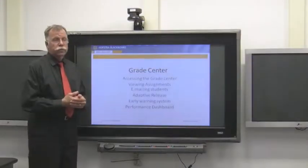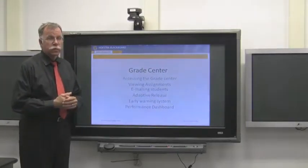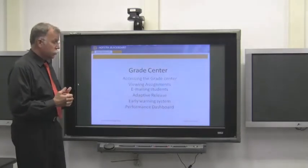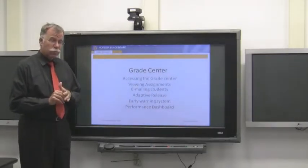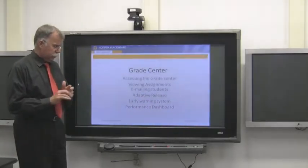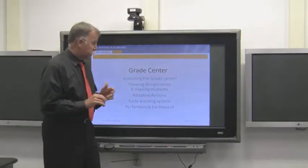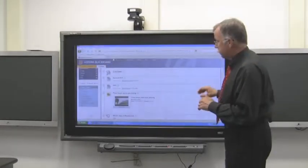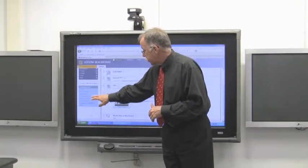Now we're going to work through the Grade Center. And this is another tool with which many of you are already familiar. Again, it's a lot the same. Just the buttons are moved around a little bit. How we're going to find it. Where do you access the Grade Center. How do you view assignments. How you use the Grade Center to email students. That's a feature we have already. But I'll show you where that is here. And we'll just touch on adaptive release. The early warning system and the performance dashboard. Different ways of using Blackboard to figure out what your students are up to.